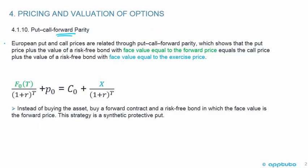We've added the word forward. European put and call prices are related through put-call forward parity, which shows that the put price plus the value of a risk-free bond with the face value equal to the forward price equals the call price plus the value of a risk-free bond with the face value equal to the exercise price.